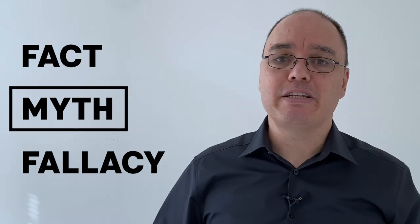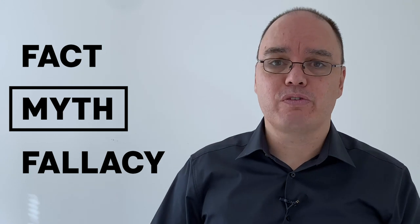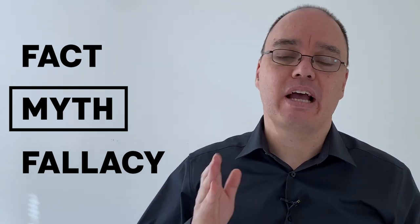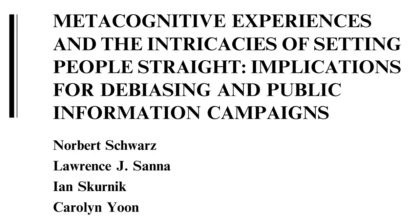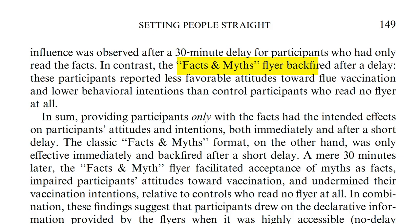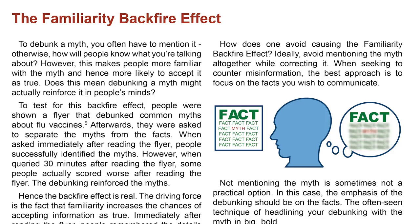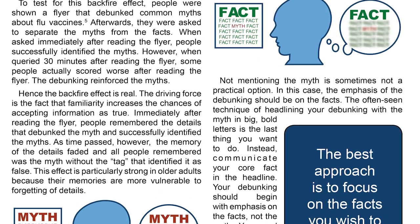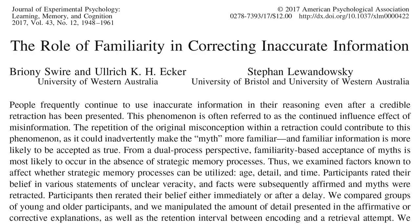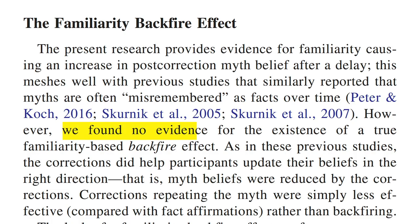The second element of a debunking is the myth. You do need to mention the myth in a debunking in order for people to tag it in their mental model as false. Early research suggested that mentioning misinformation in a debunking might backfire, causing people to believe the myth even more after they read the debunking. In the Debunking Handbook, we called it the familiarity backfire effect. But attempts to replicate this in subsequent studies failed to find evidence for a familiarity backfire effect.